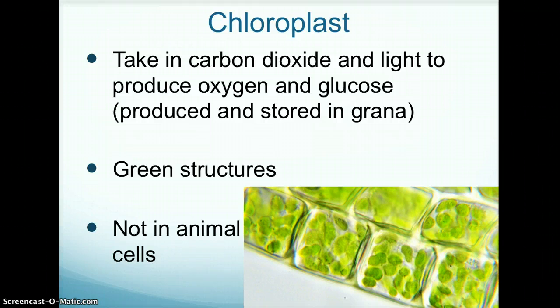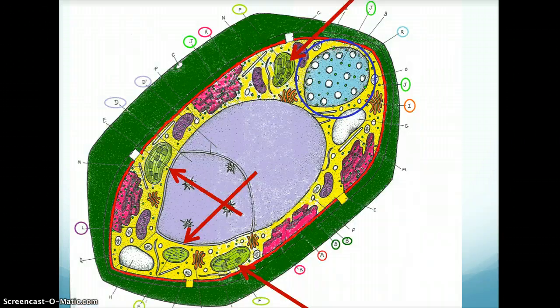Chloroplasts are green structures. They take in carbon dioxide and light to produce oxygen and glucose, which is produced and stored in green. The chloroplasts in this plant cell are lime green.